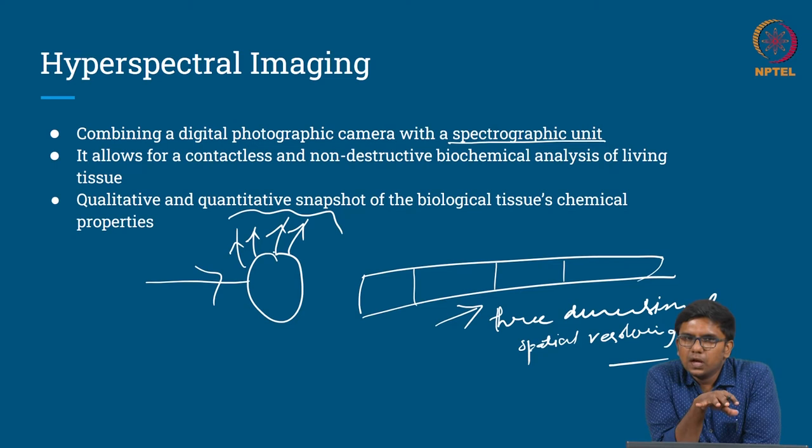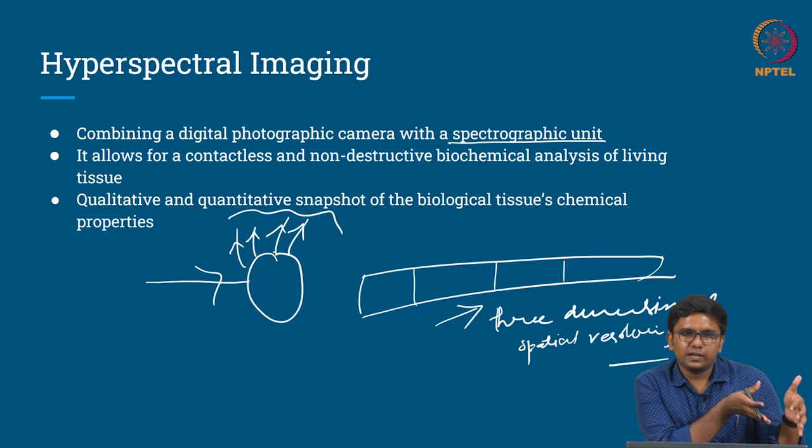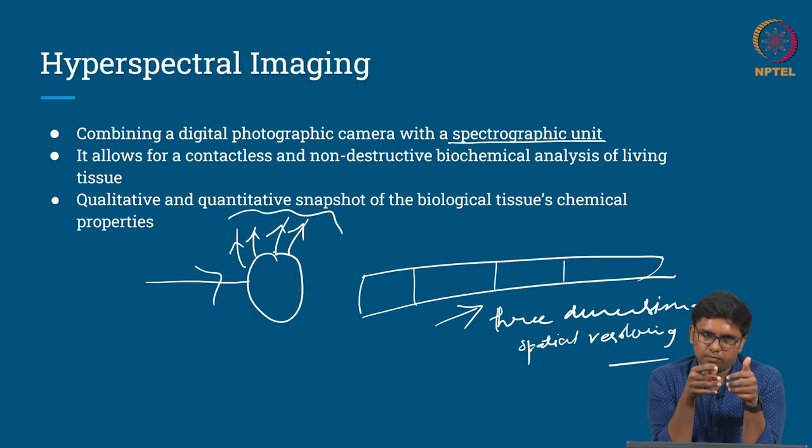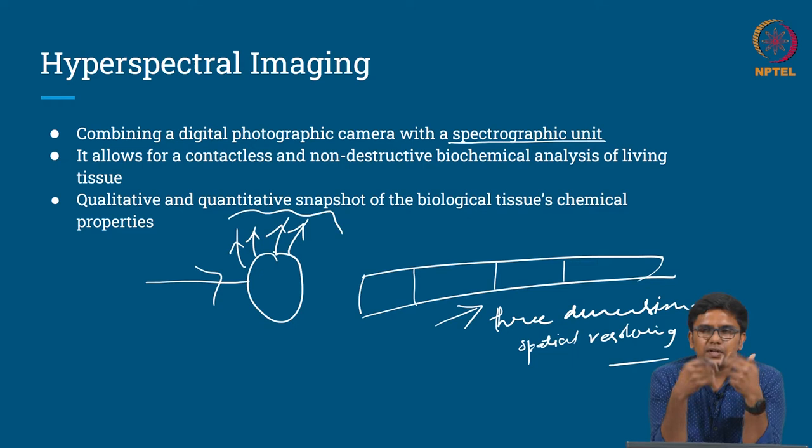Each living tissue has its own spectral properties, which are utilized here. For example, the spectral property of the liver is due to the blood flowing in it, and the spectral property of the common bile duct and gallbladder is due to the bile inside. Each tissue in the human body has a different spectral property, which is exploited in this technology.